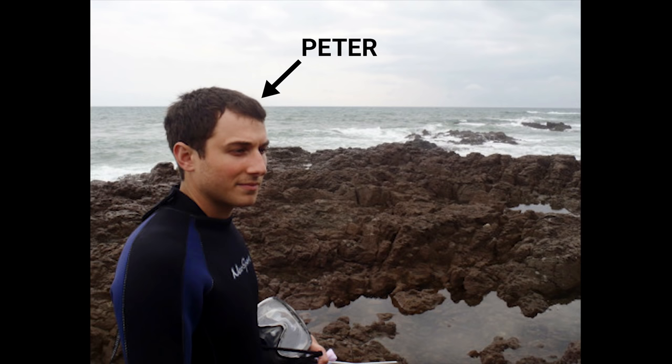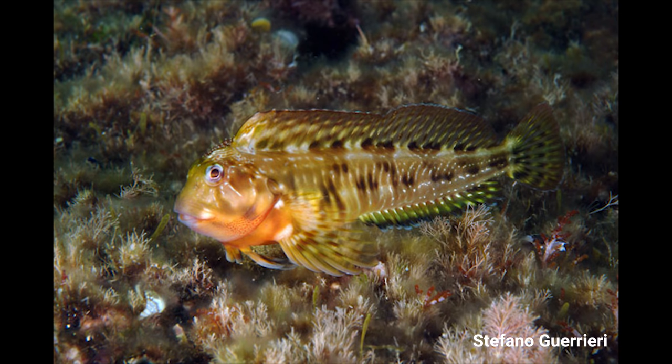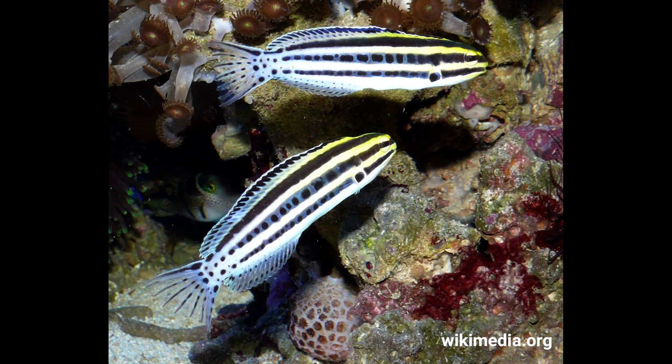My friend Peter is a biologist who studies blennies, which are these primarily small marine fish. There are over 300 species worldwide. Some blennies have these giant venomous fangs. Other blennies live on land, but most blennies live on reefs or other near shore habitats.